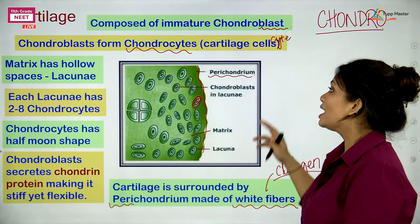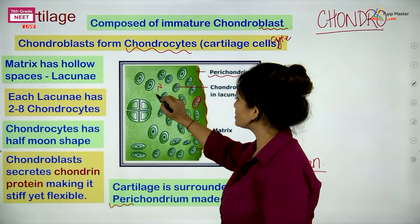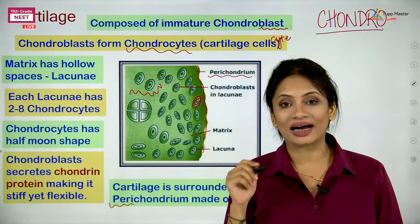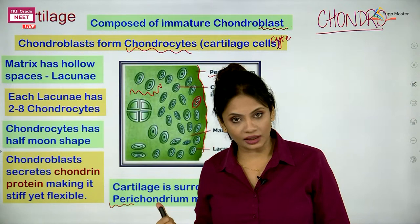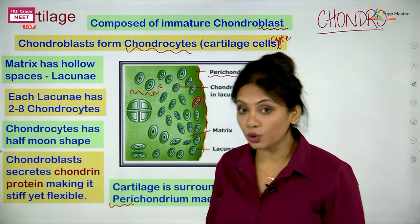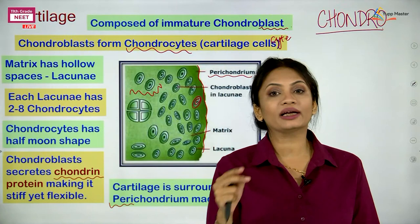Why do we use the word chondro for cartilage? The reason is that this matrix area is secreted by the chondroblast — similar to how fibroblast secreted matrix in areolar tissue. In cartilage, the chondroblast secretes the matrix, and that matrix is made up of a protein called chondrin protein. Because the protein is called chondrin, everything related to cartilage is given the name chondro.